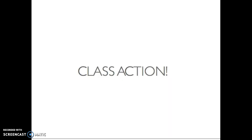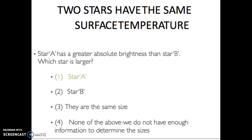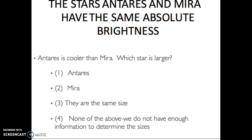Let's see if you're paying attention. Read this and try to determine the right answer — pause the video now. Here's the answer: Star A has a greater absolute brightness than Star B, which is larger. If these two stars have the same surface temperature, then A has to be larger. Here's another one: Antares and another star have the same absolute brightness. If Antares is cooler, then Antares has to be the larger star, because it has to emit more energy.